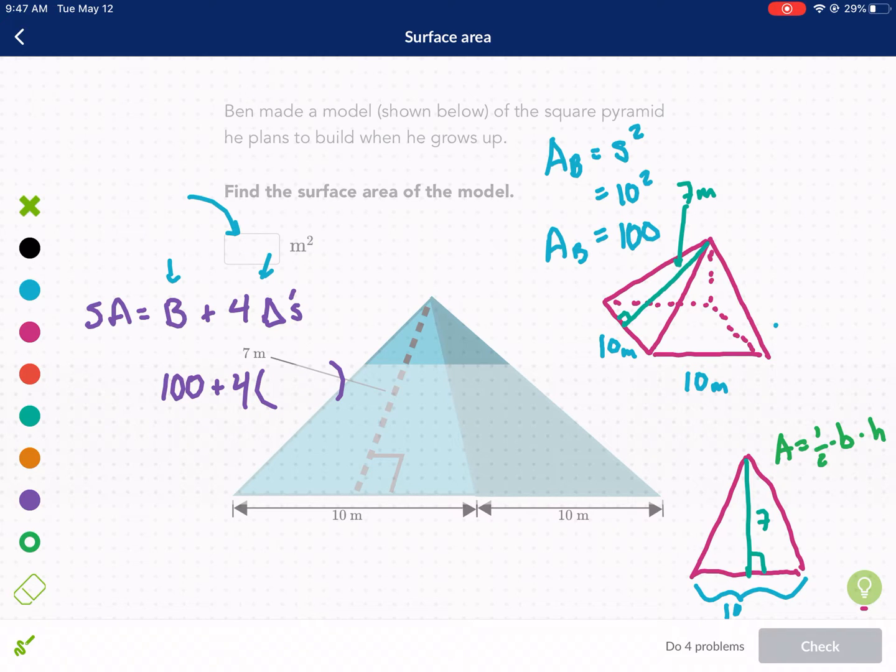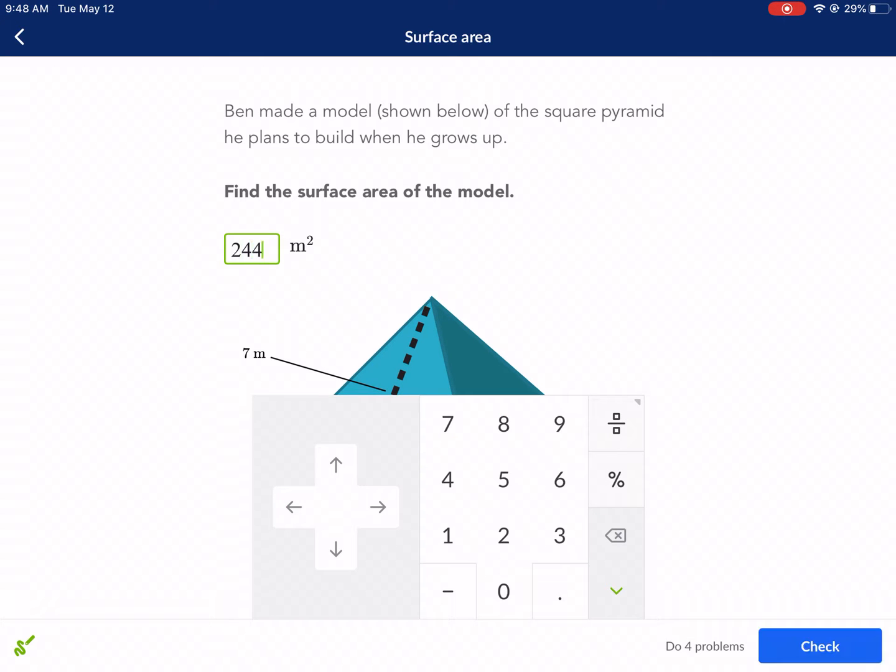We're going to plug in our information. We have area equals one half the base, which is 10, times 7. Our height is 7. So we have 5 times 7 is 35. So we're going to plug in 35 there, and that will give us our total surface area. So then we have 100 plus 35 times 4, this is going to be 140 because 35 times 2 is 70 times 2 again is going to be 140. And that should give us 240 meters squared. So I hope Big Ben gets a lot of materials to make such a large pyramid with 240 meters squared surface area. So we're going to type in 240 and check our answer.